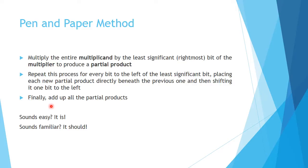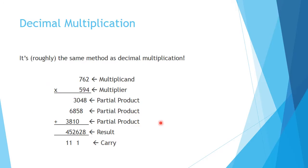It sounds pretty easy, and it is. It should also sound pretty familiar, because it's roughly the same method as decimal multiplication. Where we have a multiplicand, 762, and a multiplier, 594, we use the same method where we take the rightmost digit, which would be 4, multiply 762 by that 4, you get 3048. Then you multiply 762 by 9 to get 6858, and lastly we multiply 762 by 5 to get 3810. Then we add up all the partial products to get our result, 452,628.